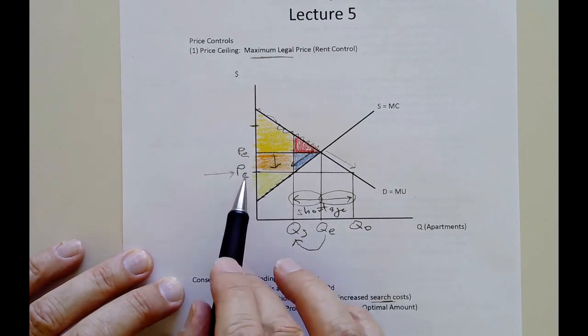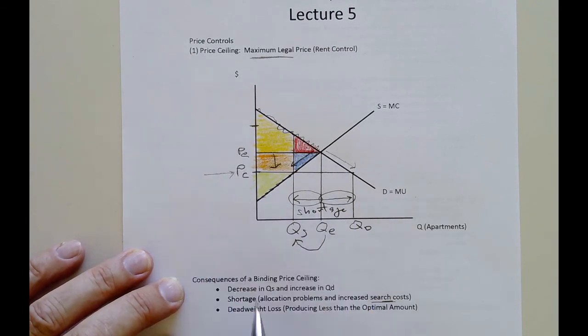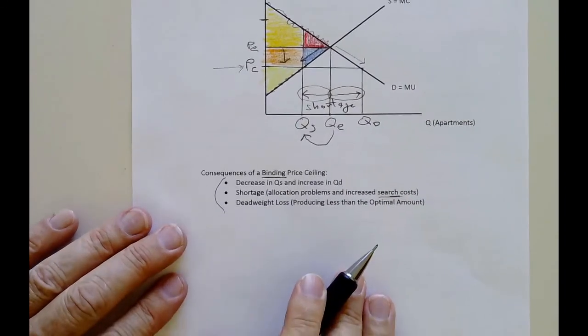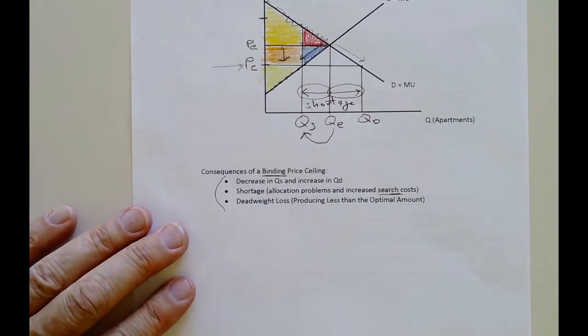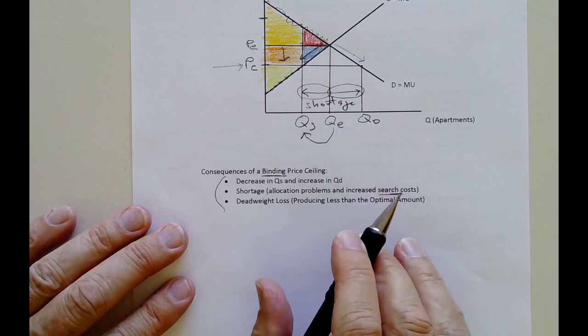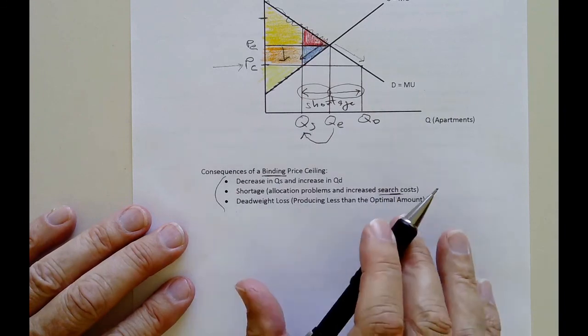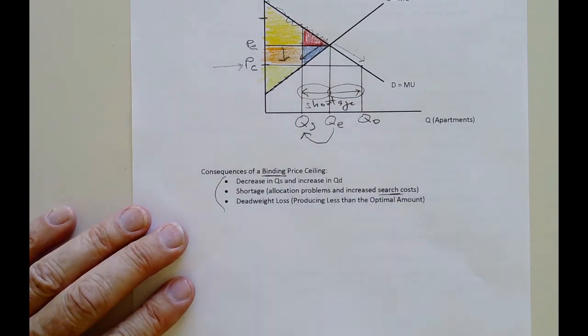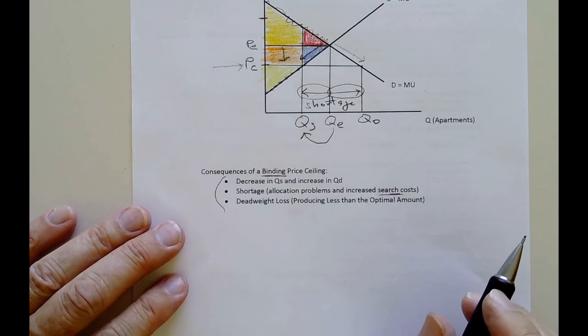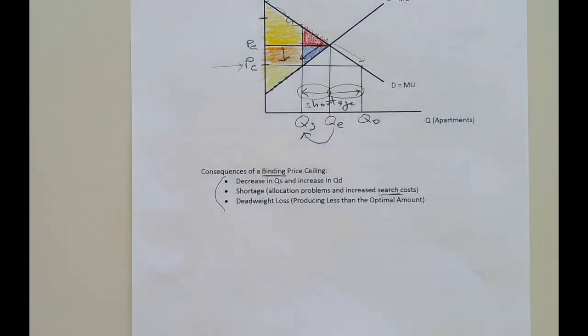So with the ceiling, if the ceiling is below equilibrium, it is said to be binding, because it creates these conditions down here, it has an effect. And if it's above equilibrium, it's said to be non-binding, because then it has no effect on the market, as long as the equilibrium price is below the ceiling price. And I'll stop there. Thank you.